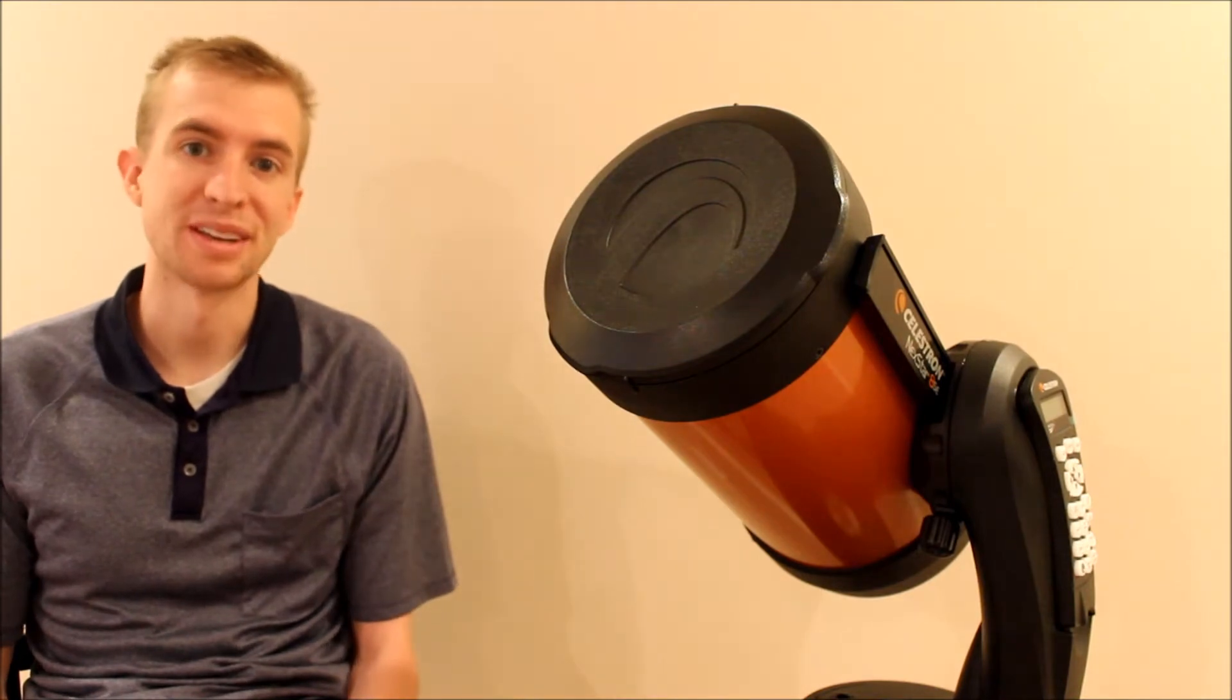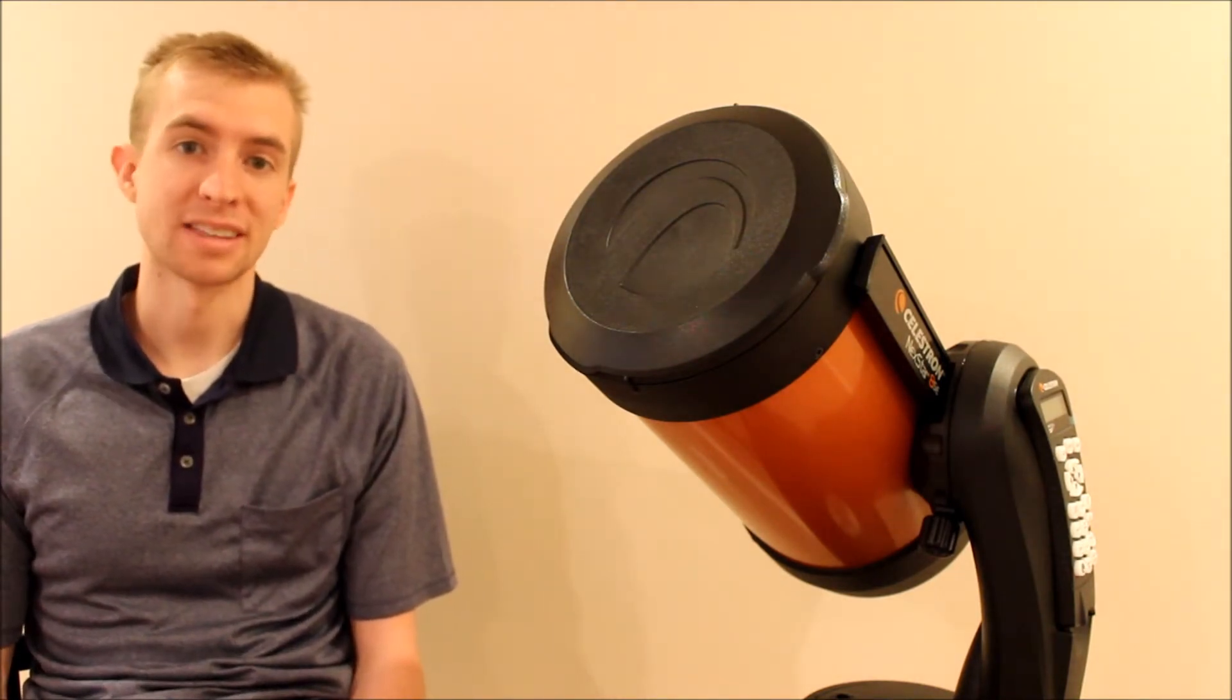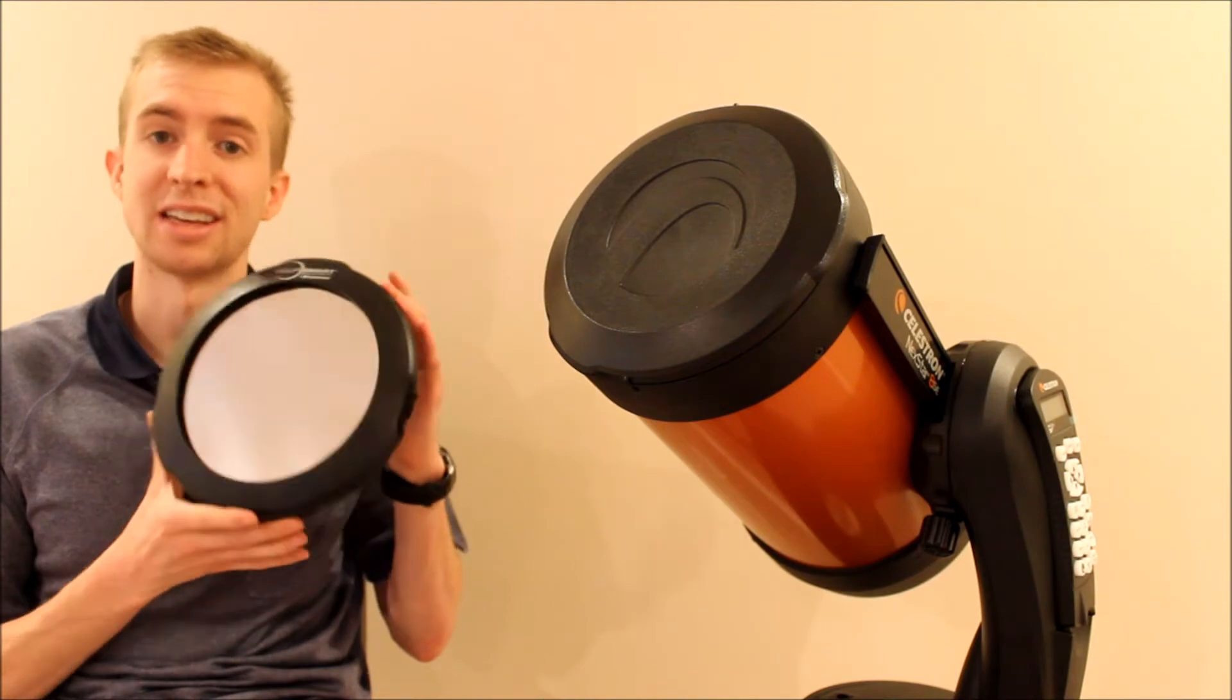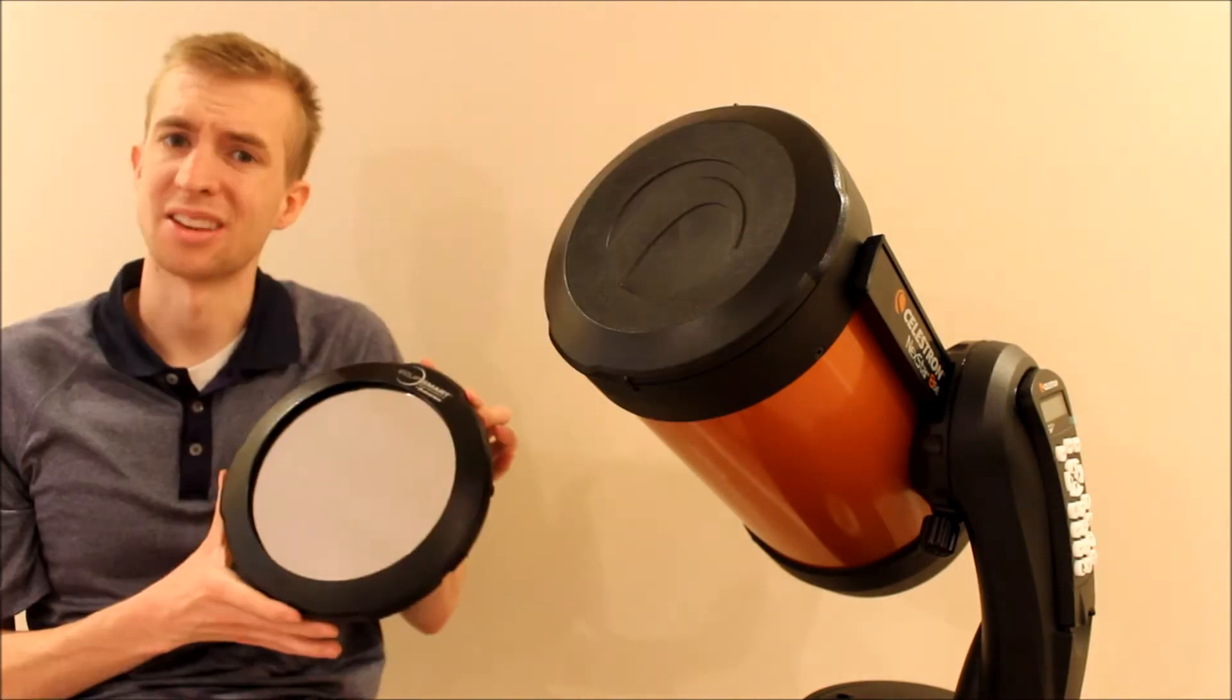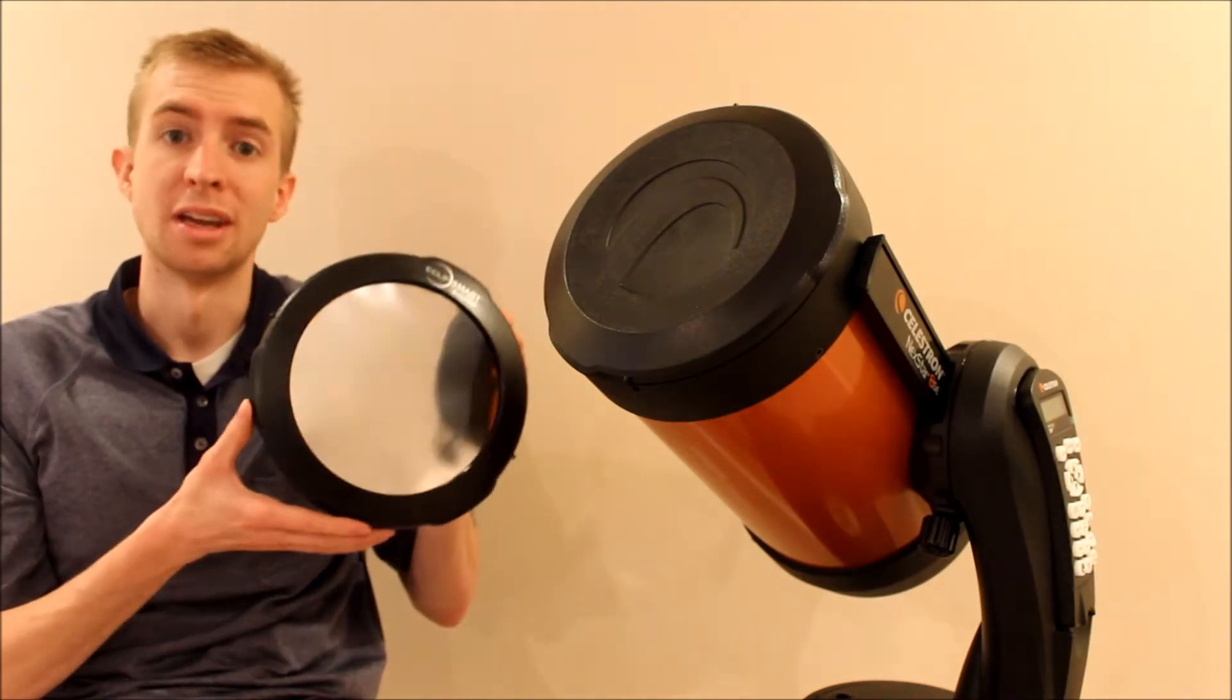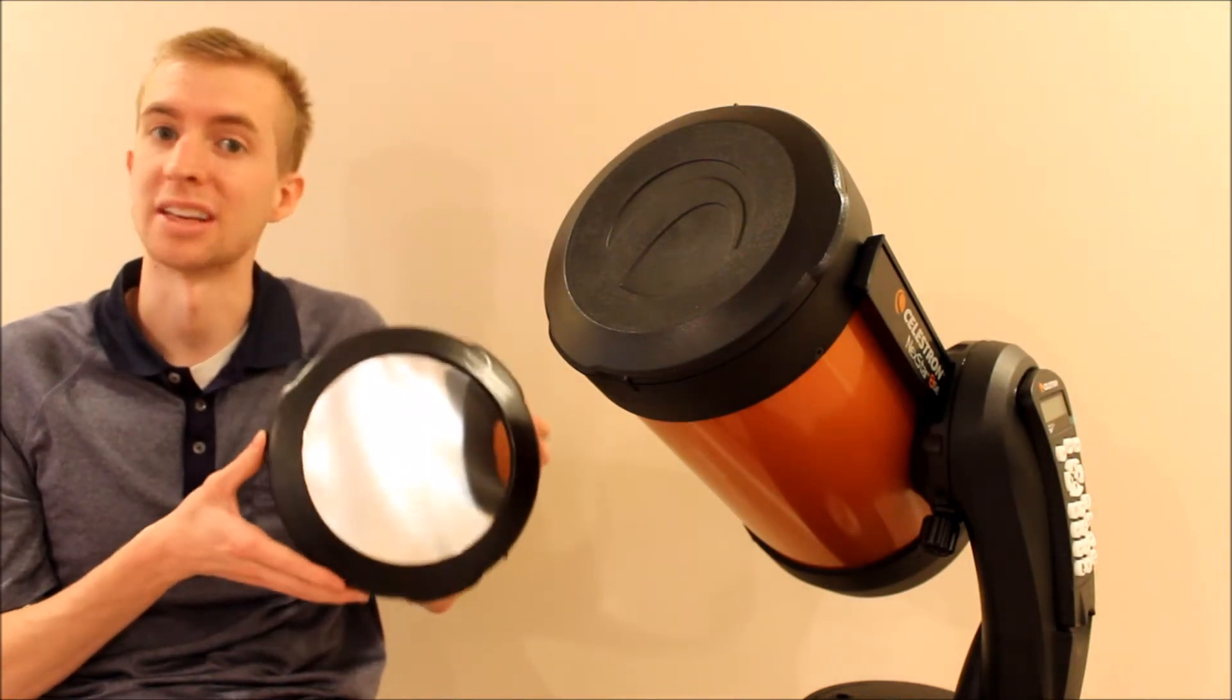That being said, Celestron did come out with something that I said, hey, that's pretty innovative. It's basically a dust cap for your telescope with a filter inside of it. That's only 4.2 ounces and so it weighs next to nothing. So this was actually one of the few, in my opinion, innovative products that came out during that time period leading up to the eclipse.